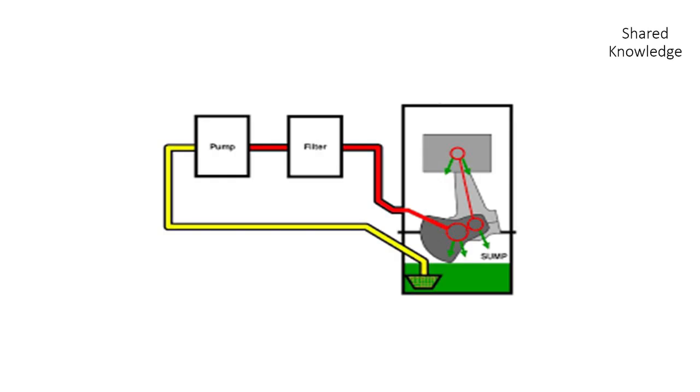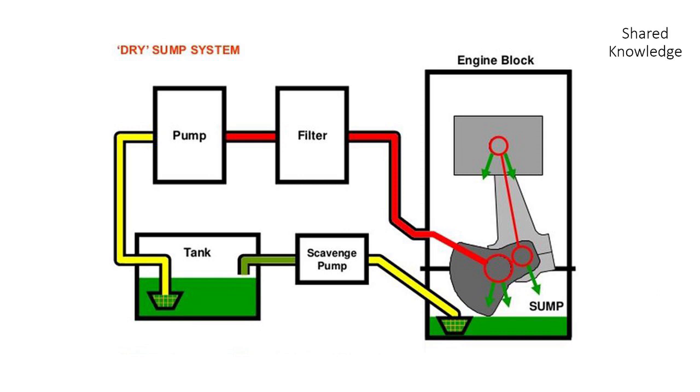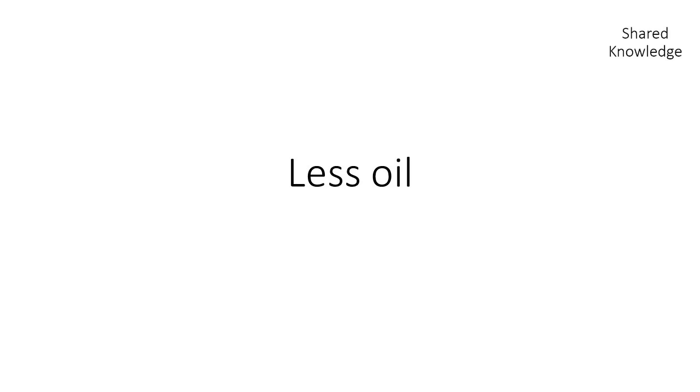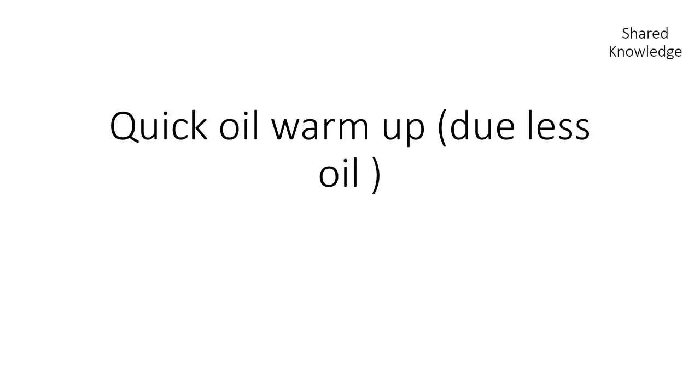The wet sump is cheaper to build because it requires only one pump — or in some cases no pump at all — whereas the dry sump requires at least two pumps. It also has less weight, no extra pump, less complexity in design, and uses less oil overall since there is no external reservoir. All the oil is contained within the crankcase.